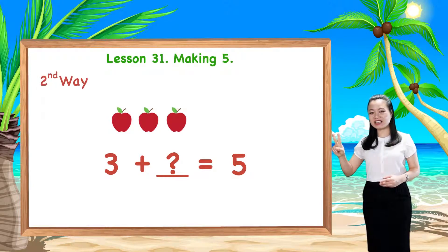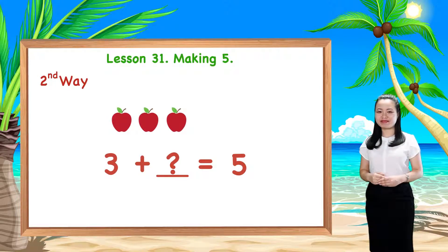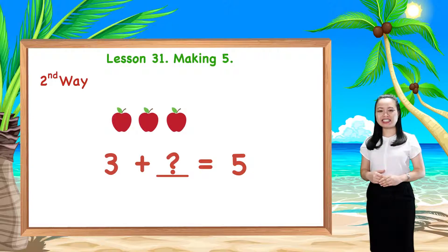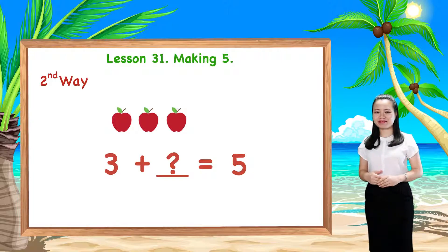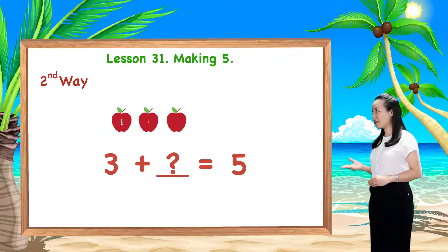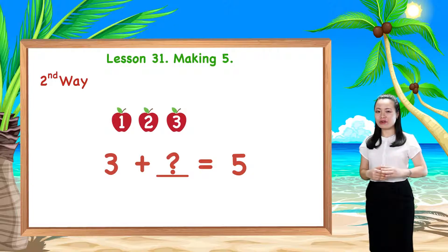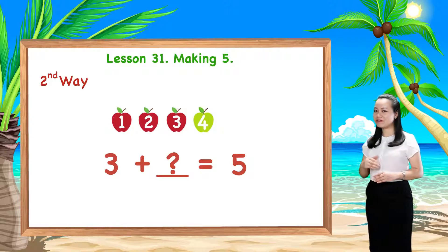The second way is, we count and count on more apples until we get five. Here, we already have three. So, let's draw and count on four, five.